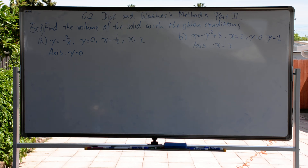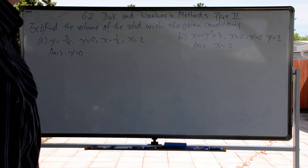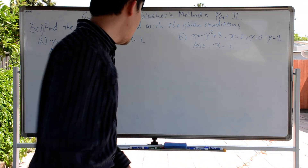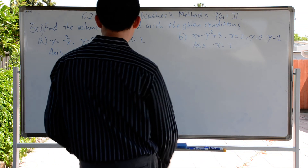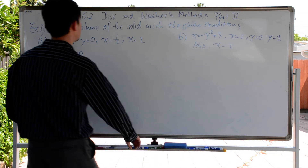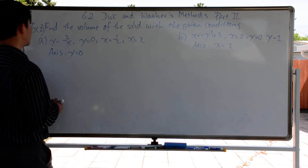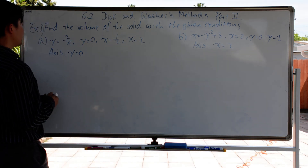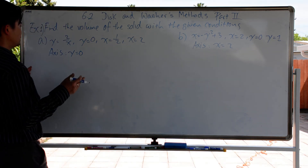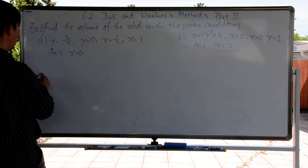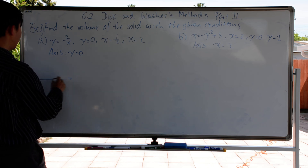Find the volume of a solid with the given conditions. We have y equals 2 over x, y equals 0, x equals 1/2, and x equals 2. The first thing you probably want to do is sketch the graph, if it's a simple equation. So we sketch the graph first.